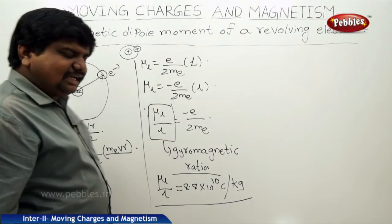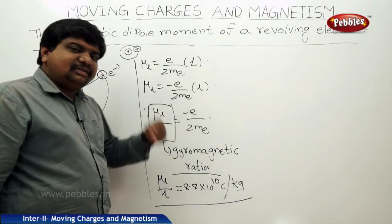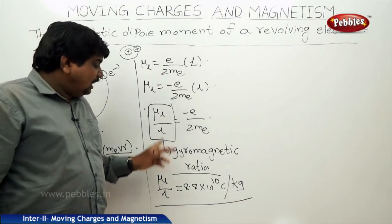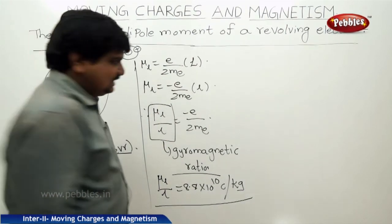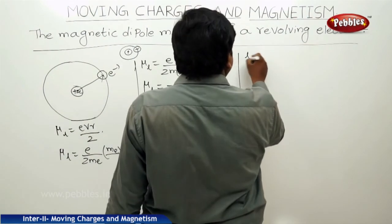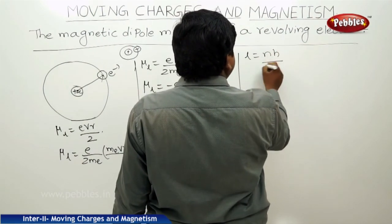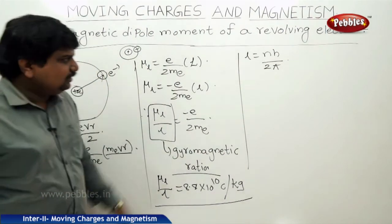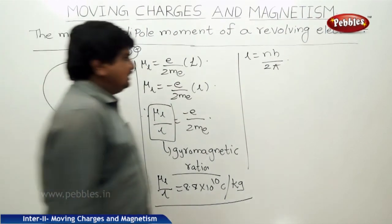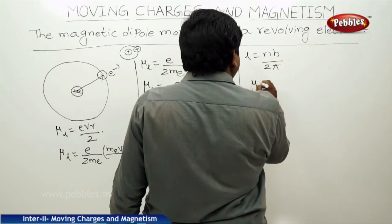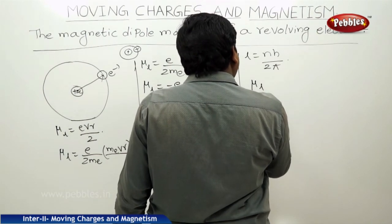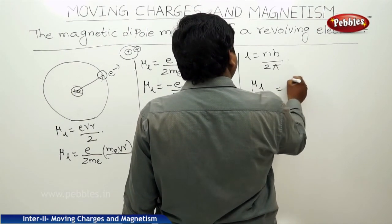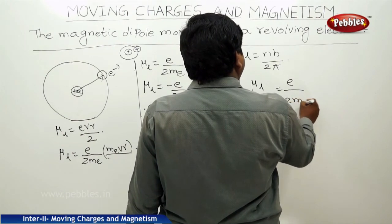Here L is the angular momentum. According to the basic properties of Bohr's atomic model, angular momentum is quantized, therefore L equals N·h divided by 2π. Substituting this N·h over 2π in the gyromagnetic ratio equation, mu_L divided by (N·h / 2π) equals E divided by 2Me.